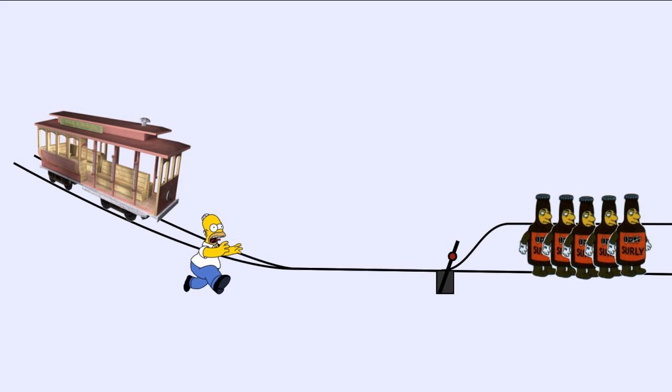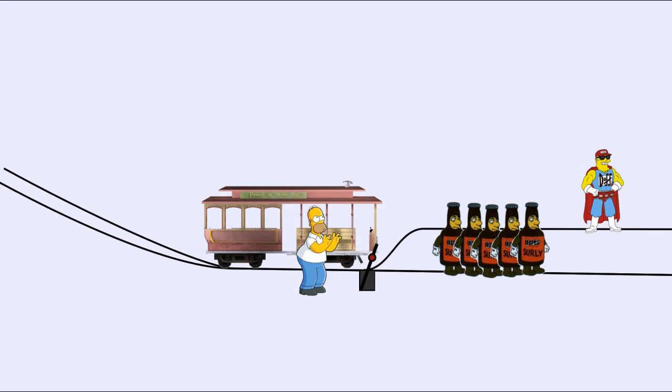Scenario number one: an empty trolley is out of control and headed for five people on the track, who will be killed by the trolley. There is a switch to send the trolley to a different track. There is however also a person on the second track, who will be killed if the trolley is diverted. The question is then, would you throw the switch if you had the chance to do so?